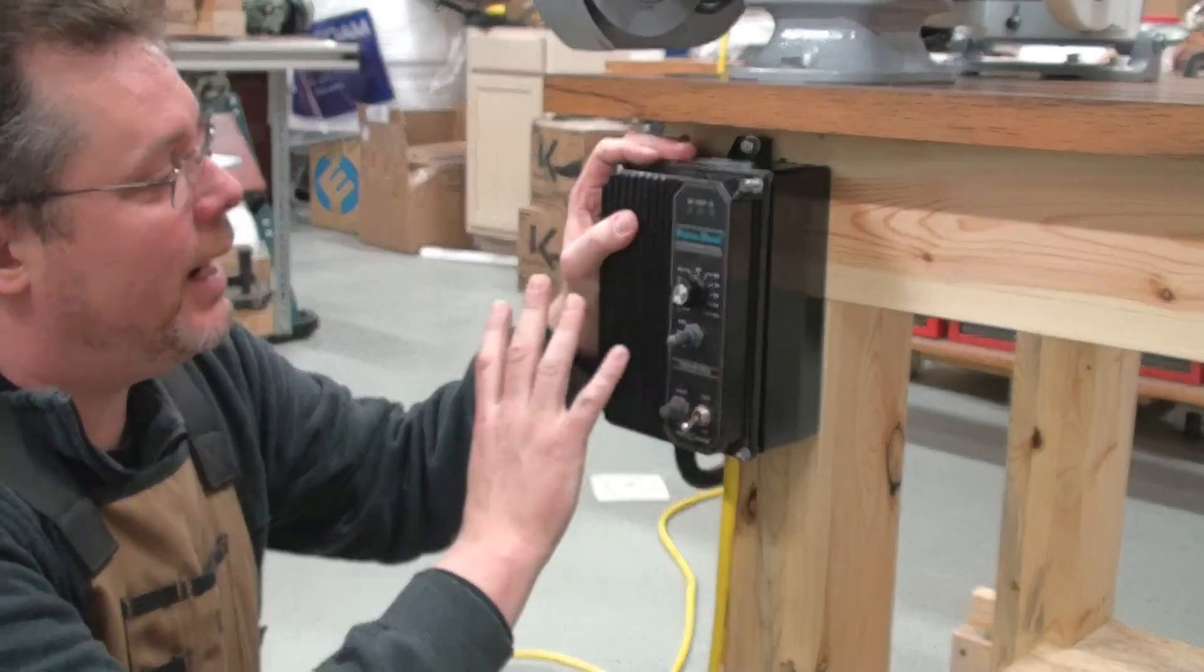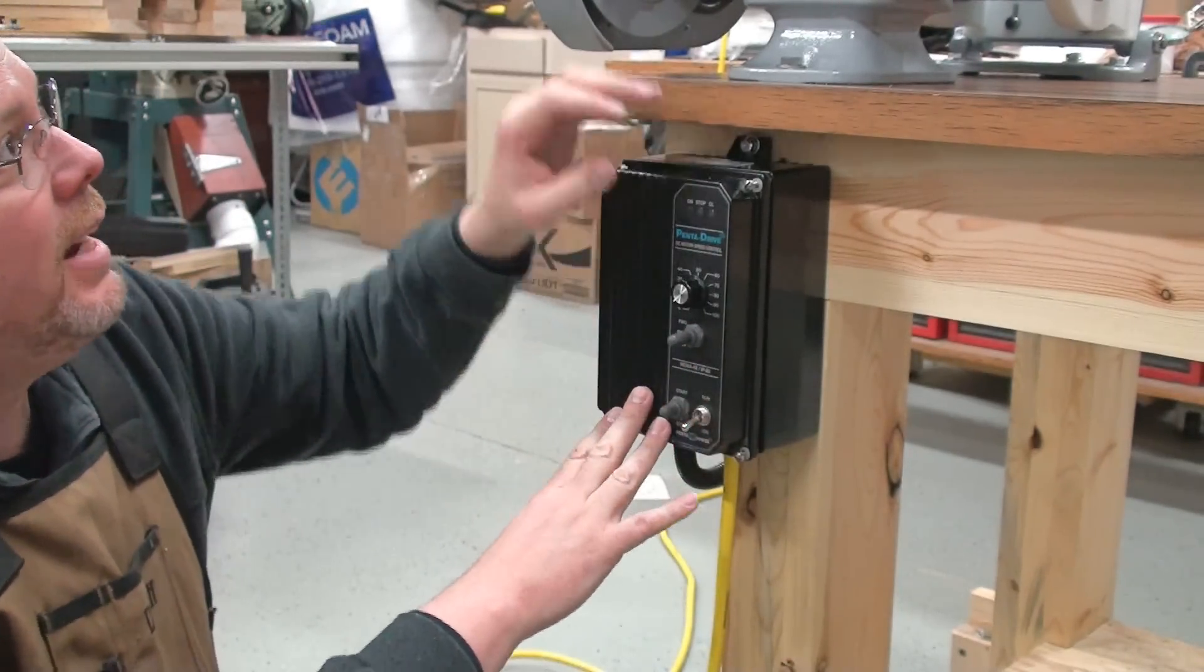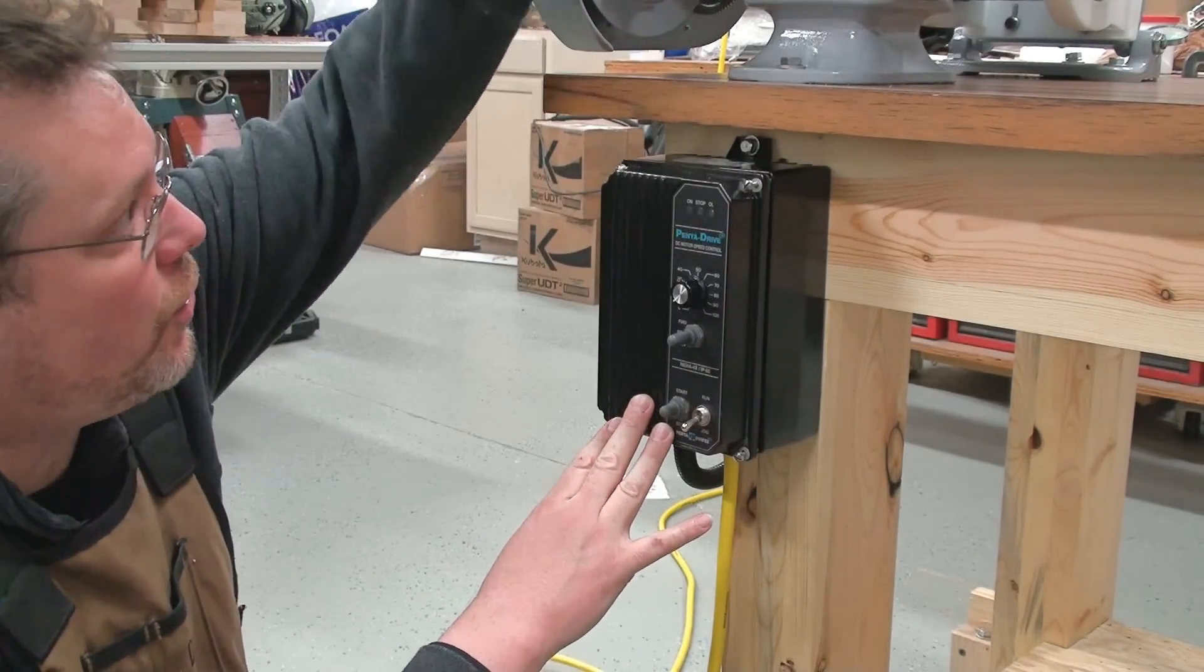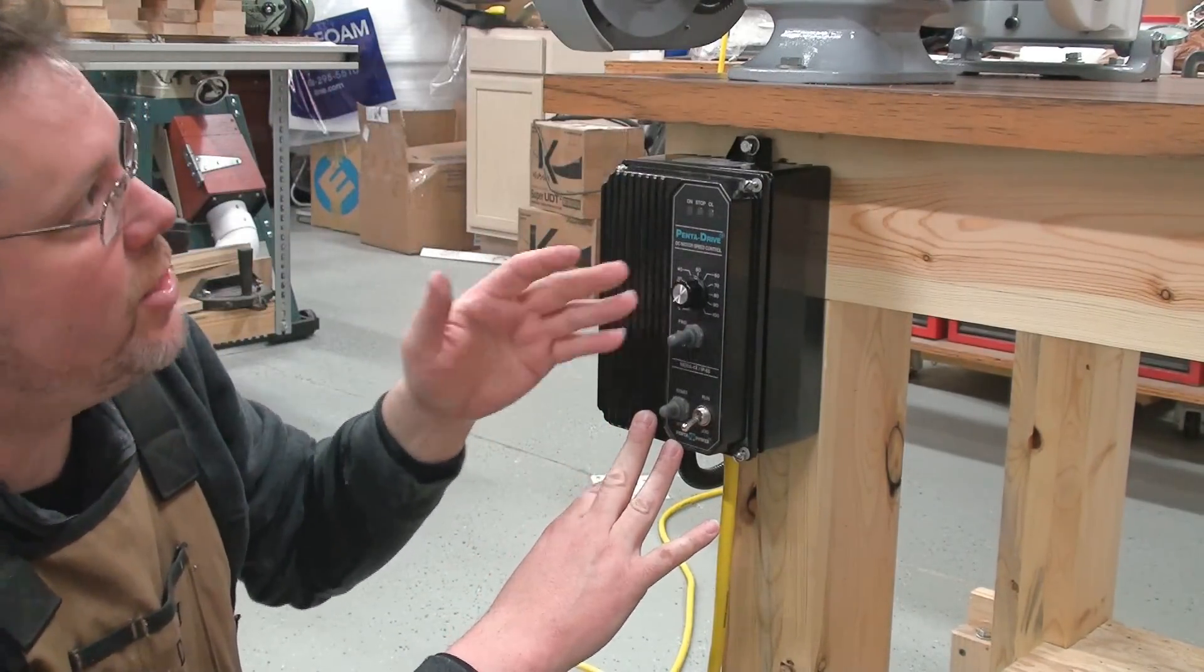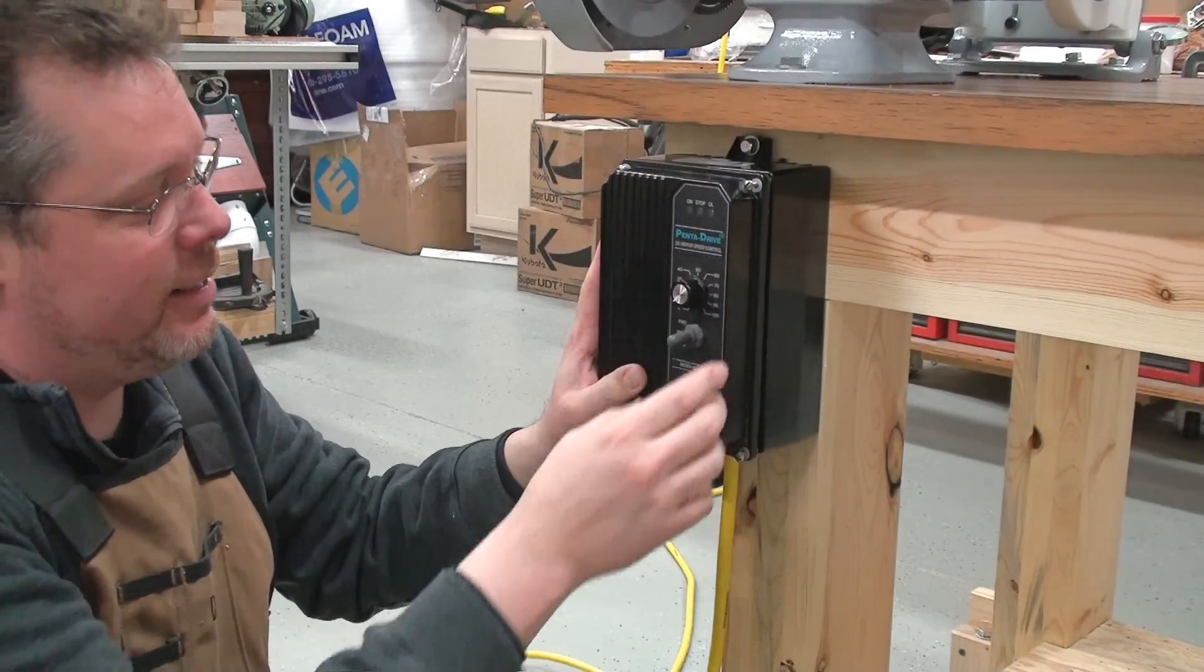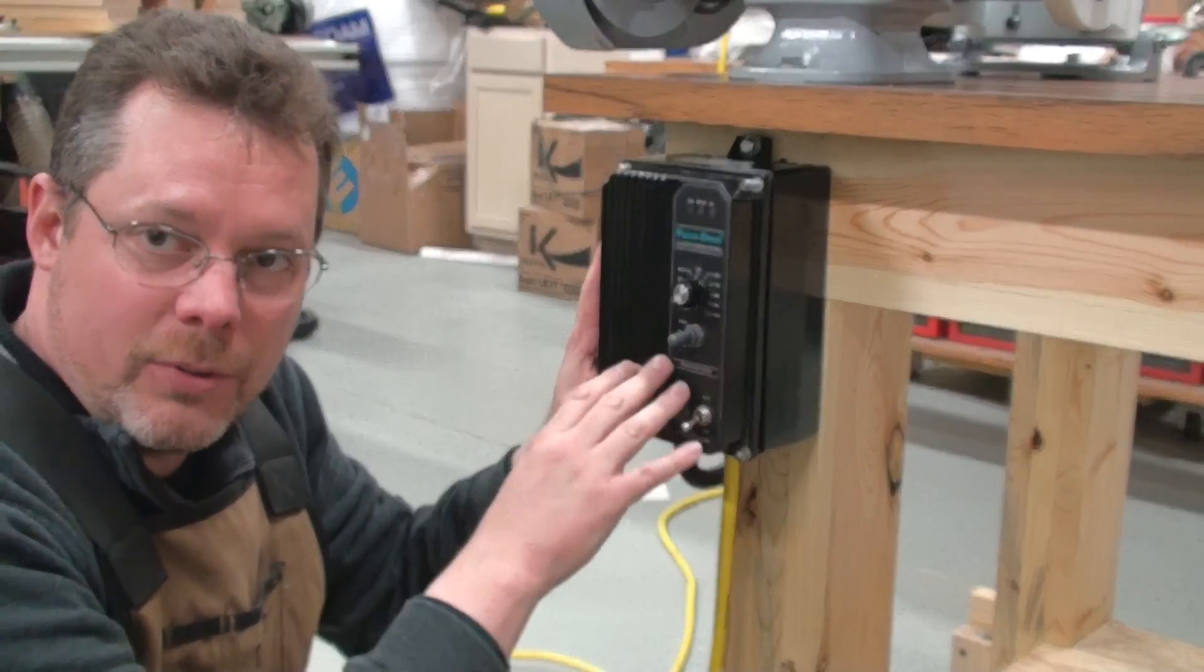I installed this box down here specifically because I don't have to reach up and over the machine to control the motor. I can just reach down, so while I'm working up there, my hand is just right down here that I can adjust the speeds, turn it on and off, forward-reverse.